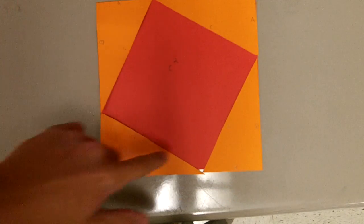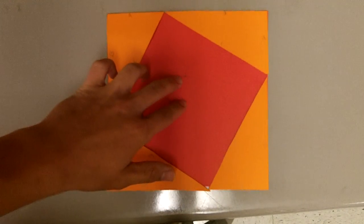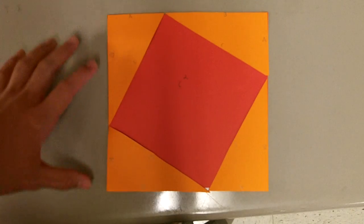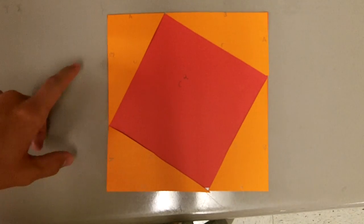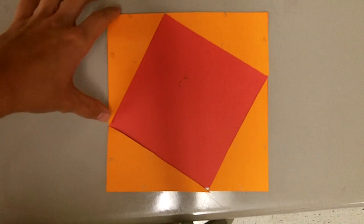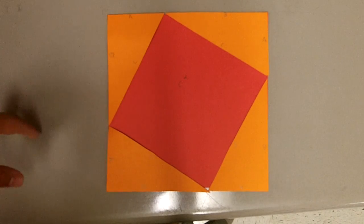You start off with four right triangles, as you can see in the orange, and it's on a piece of square paper, which is the red. When you put the border perfectly with the border, it forms the right triangles.